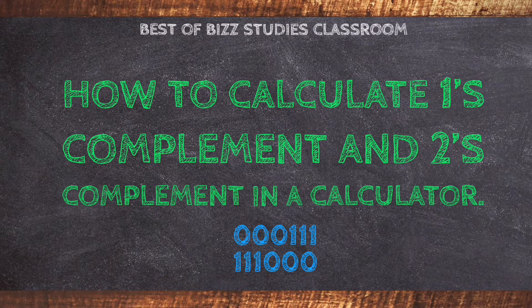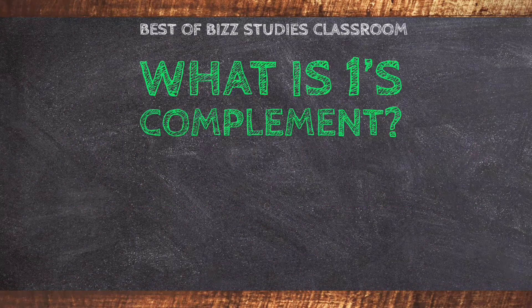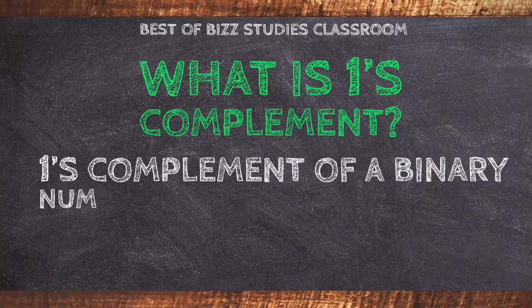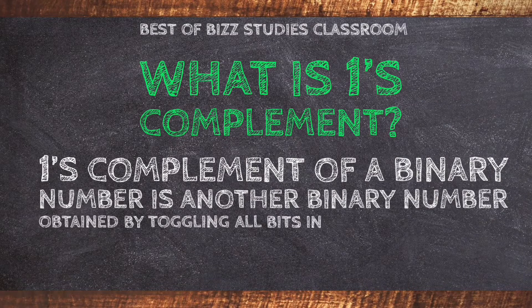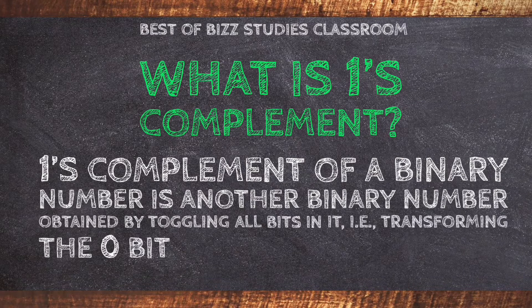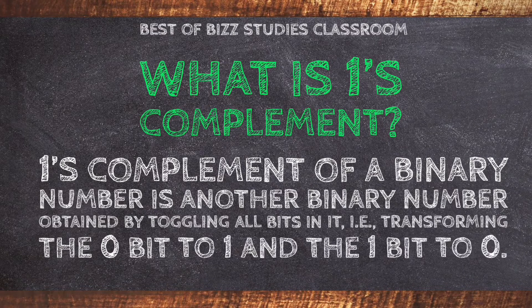Firstly, what is 1's complement? 1's complement of a binary number is another binary number obtained by toggling all bits in it, transforming the 0 bit to 1 and the 1 bit to 0.